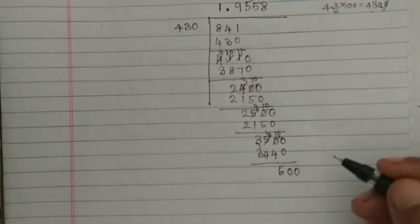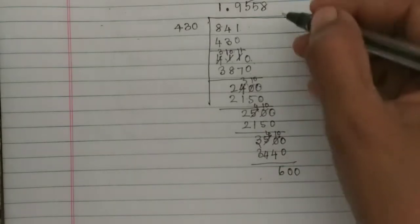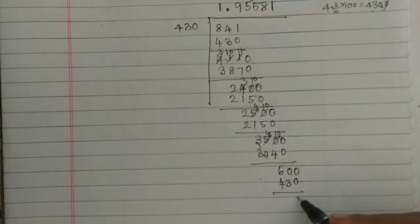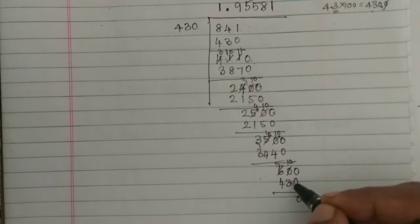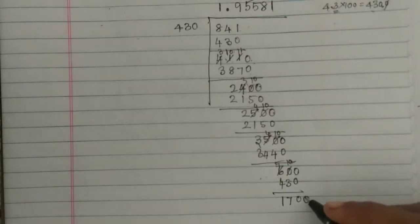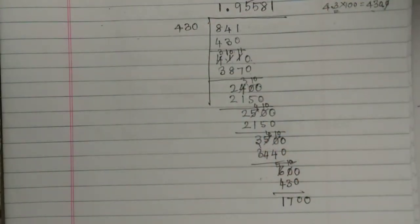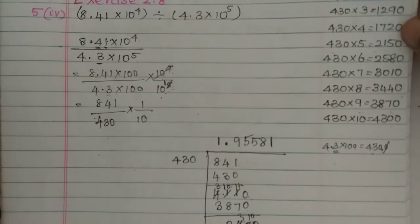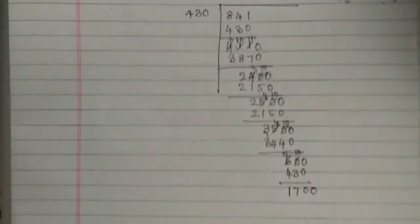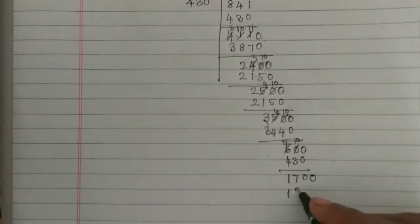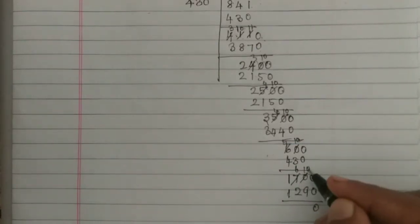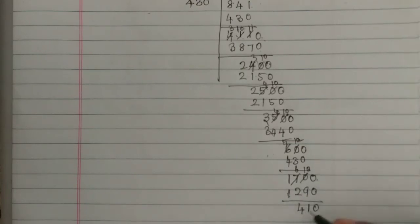So remainder is 60. Bring down 0 to get 600. There is no next digit so we add 0. 1 times 430 is 430. 0 minus 0 is 0, 10 minus 3 is 7, 5 minus 4 is 1 — so 117 here. Bring down 0 to get 1700. 4 times 430 is 1720 — too big; 3 times 430 is 1290.